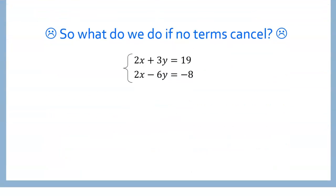What do we do if no terms cancel? Let's see what happens when we try adding these straight down — we do have our terms lined up. 2x plus 2x is 4x. 3y minus 6y is negative 3y. 19 minus 8 is 11. But we still have two variables — what do we do with that? We were trying to make one variable disappear, and that didn't work how we wanted.